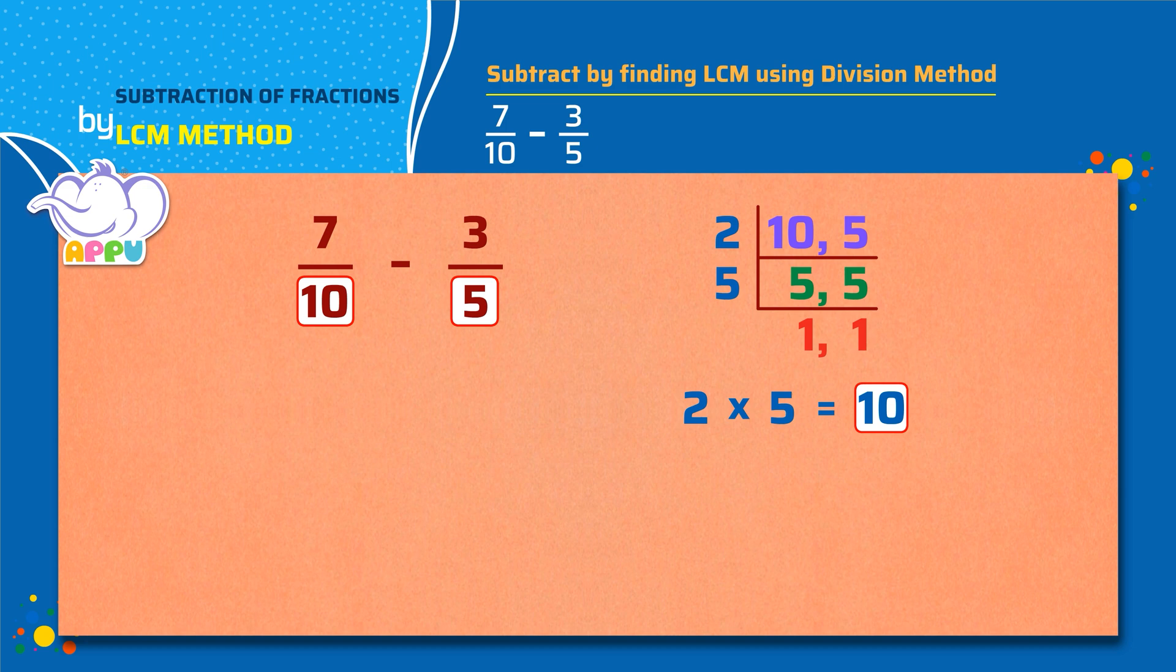Let's make the denominators the same as 10. The denominator of the first fraction is 10, so we use it as it is. To change the denominator from 5 to 10, we have to multiply 5 with 2. Since we multiply the denominator with 2, we will also have to multiply the numerator with 2, which is 3 times 2 which equals 6. Now 3 by 5 becomes 6 by 10.